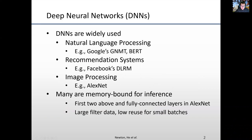Today, Deep Neural Networks are one of the most popular workloads for computer architecture. They have been widely used in natural language processing, like Google Natural Language Machine Translation and BERT, recommendation systems like Facebook DLRM, and image processing like ResNet and AlexNet.